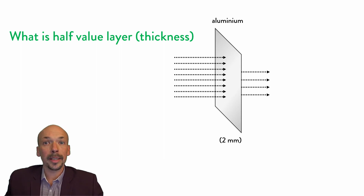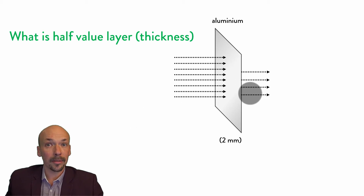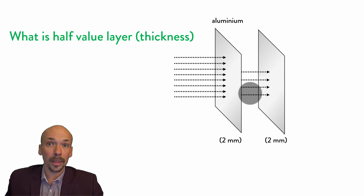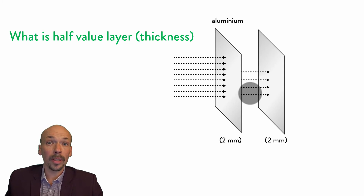As you can see, half the radiation has penetrated this sheet. If it meets another aluminium sheet of 2 mm, again half of it will be penetrating it and half of it will be absorbed.